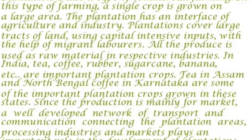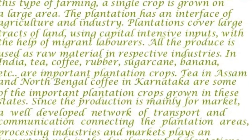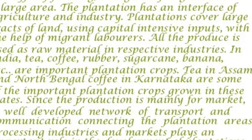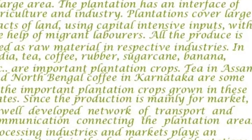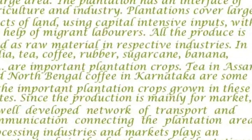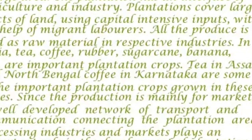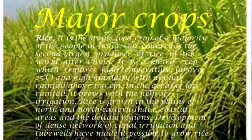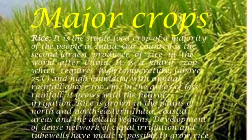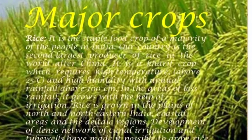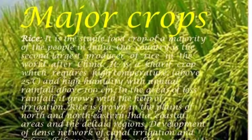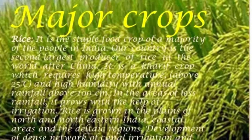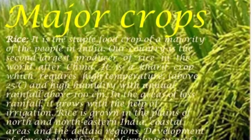On page number 60 are the cropping seasons. There are three cropping seasons: Rabi season, Kharif season, and Zaid season. Writing about the three main cropping seasons is your homework — refer to page number 60. A variety of food and non-food crops are grown in different parts of the country depending on soil, climate, and cultivation practice. Major crops grown in India are paddy, wheat, millets, pulses, tea, coffee, sugarcane, oilseeds, cotton, and jute.